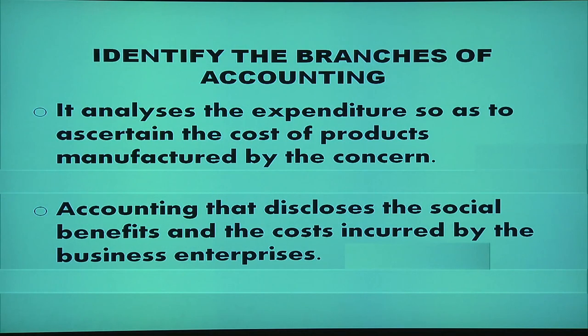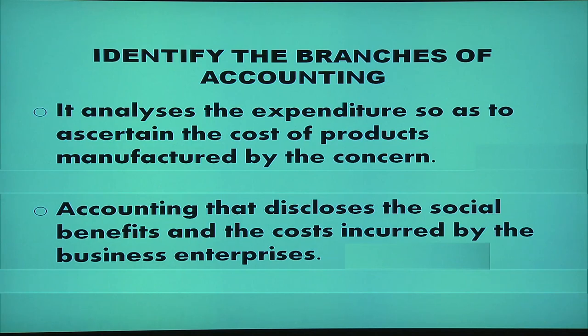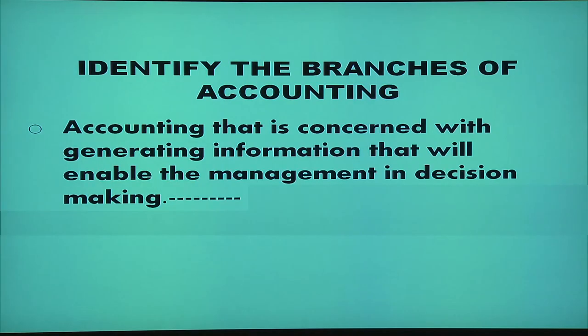Now, having studied the different branches of accounting, here are some review questions. Which branch of accounting analyzes expenditure to ascertain the cost of products manufactured? That is cost accounting. Which branch discloses the social benefits and costs incurred by the business enterprise? That is social accounting. Which branch generates information to enable management in decision making? That is management accounting, because it helps management in taking decisions.